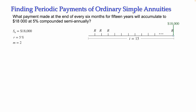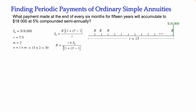We need to know N. N equals T times the number of payments per year, so N equals 15 times 2, which equals 30. Because this annuity is related to a future value, I'll use the future value formula: Future Value equals the payment R times the factor [(1 + i)^N − 1] divided by i. Since the question asks for the payment, we solve this equation for R. Cross-multiplying — multiply by i and divide by the factor — gives us R equals i times S_N divided by [(1 + i)^N − 1].